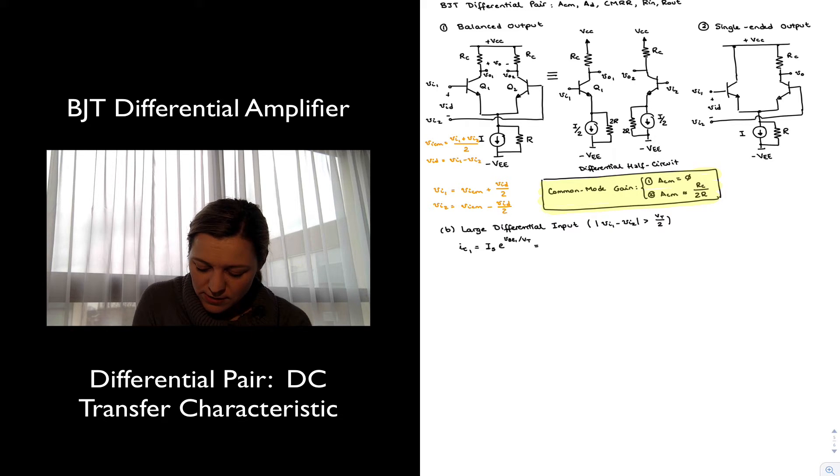I can rewrite this as IS e to the VB1 minus VE1 divided by VT. And likewise I can write a similar expression or a parallel expression for IC2, which is related to VBE2. And I can also rewrite this as IS e to the VB2 phase voltage of transistor 2 minus VE2 divided by VT.